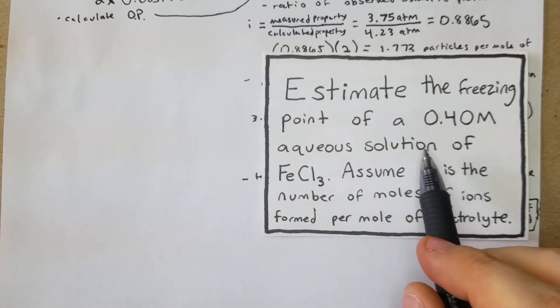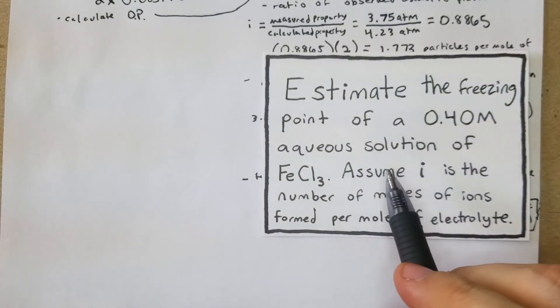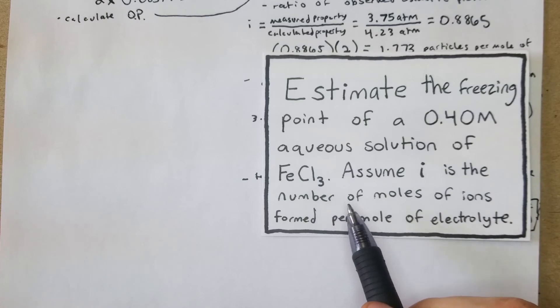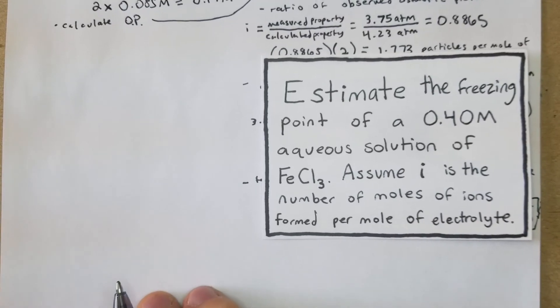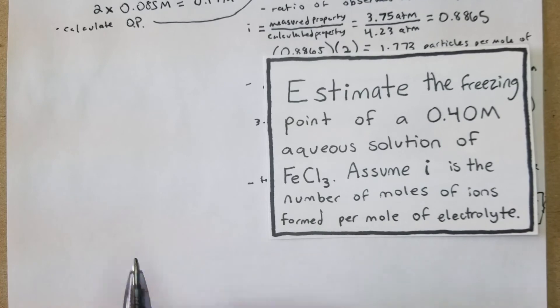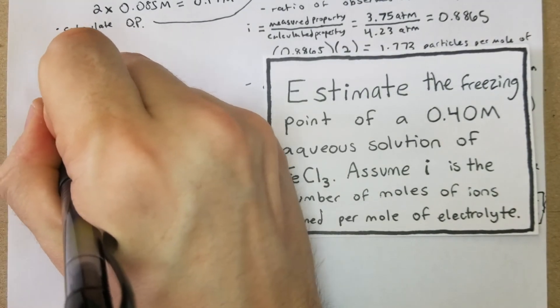Estimate the freezing point of a 0.40 molar aqueous solution of FeCl3, and we're going to assume that the i is the number of moles of ions form per mole of electrolyte. So this one is going to be a lot easier by contrast.